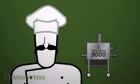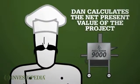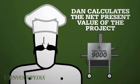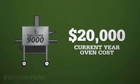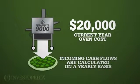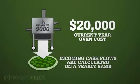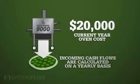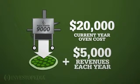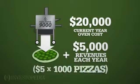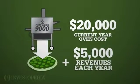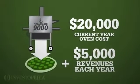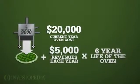To evaluate the purchase of the oven, Dan calculates the Net Present Value of the project. The oven costs $20,000 in the current year. The incoming cash flows created by the new oven are calculated on a yearly basis. The oven will add $5,000 — that's $5 times 1,000 pizzas — in revenue to Dan's business every year for six years.